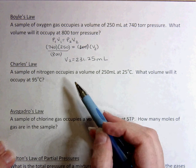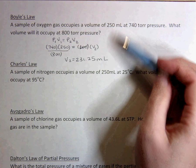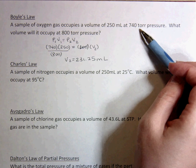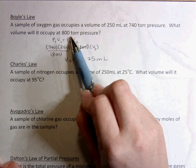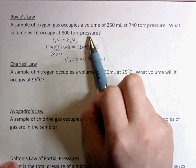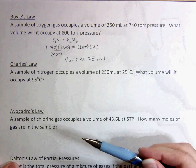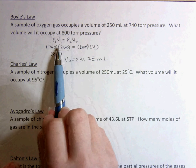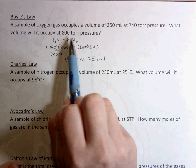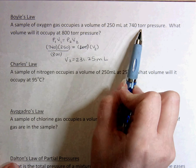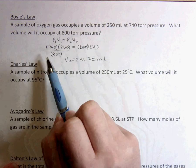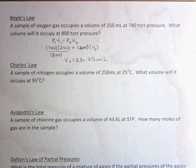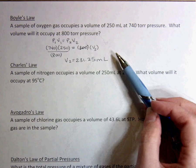A couple of things to point out: make sure that your volumes are using the same unit, and that your pressures are using the same unit. If you have two pressures or two volumes given in different units, you will need to convert them to the same unit before you can plug into this formula. For example, if one pressure is in torr and another is in atmospheres, make sure that you convert it — the conversion factors are in your packet.